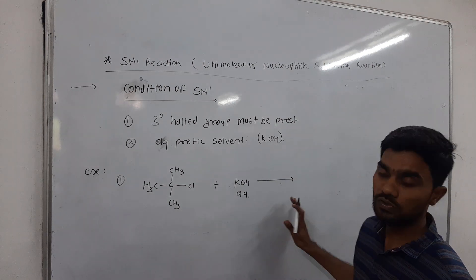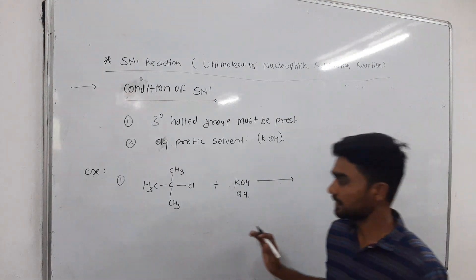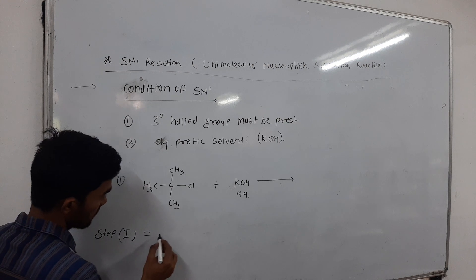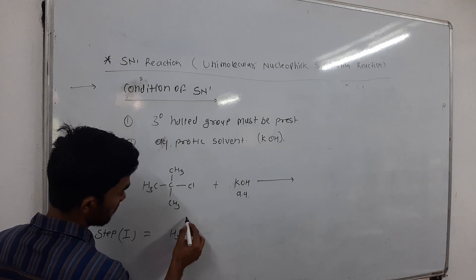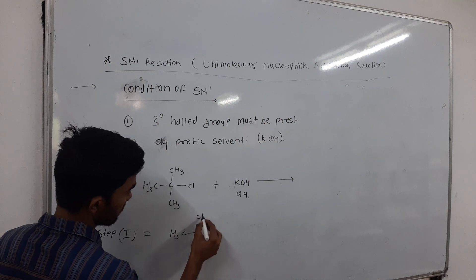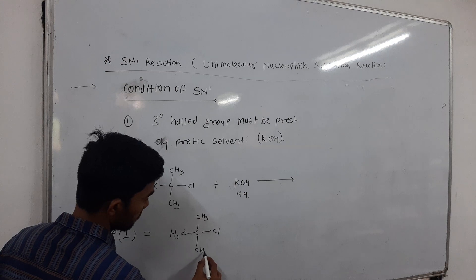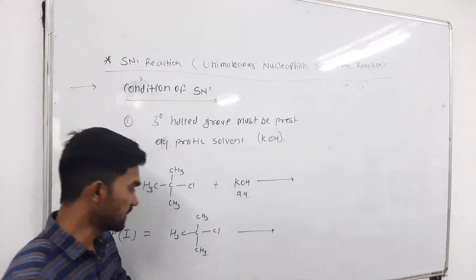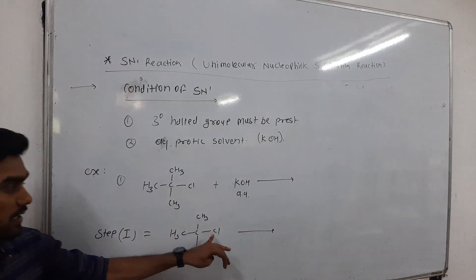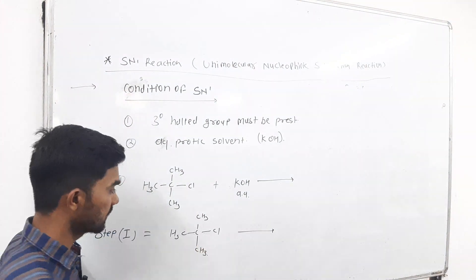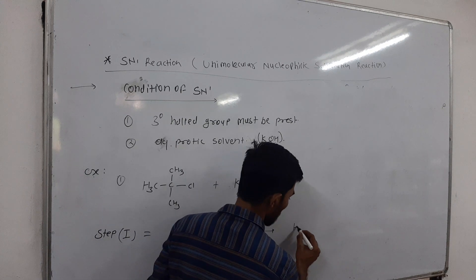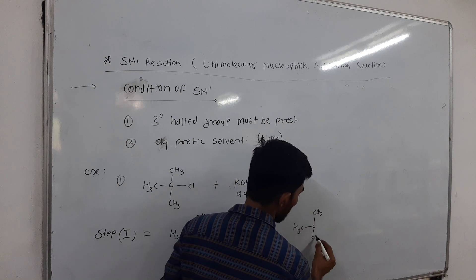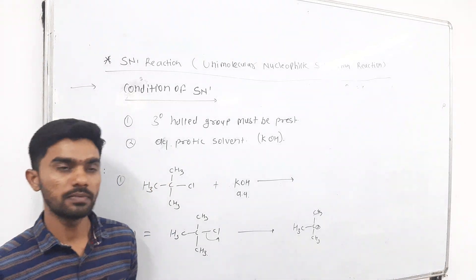The nucleophilic substitution reaction is a two-step reaction. In the first step, the tertiary chloride group undergoes removal of the leaving group — the chloride — resulting in the formation of a tertiary carbocation.